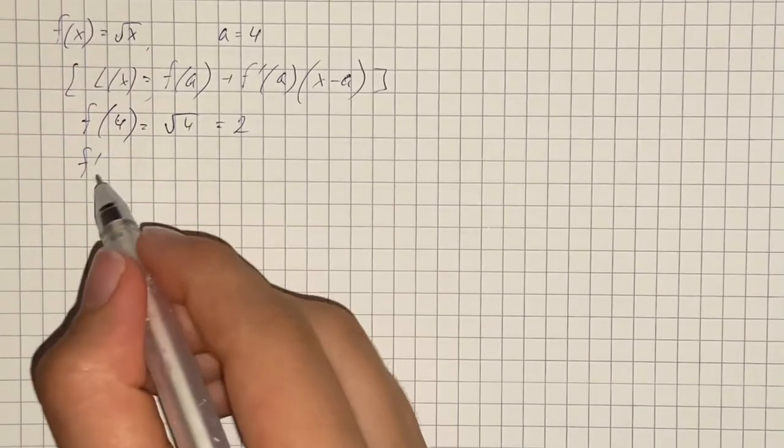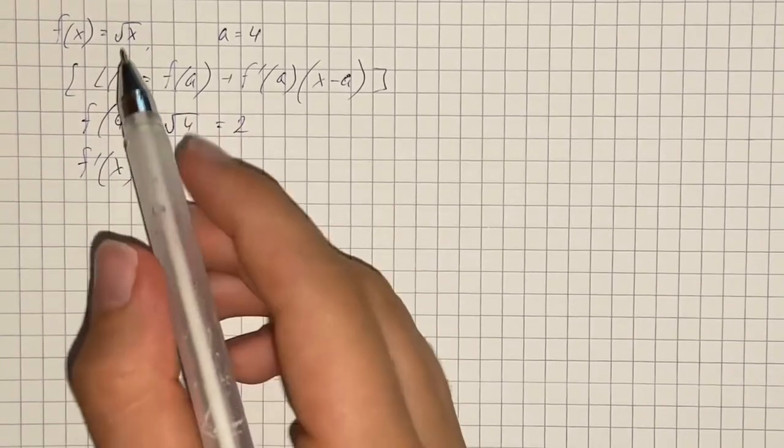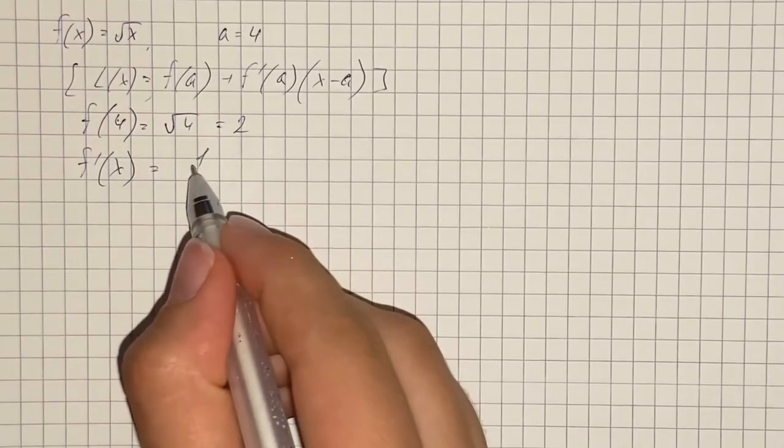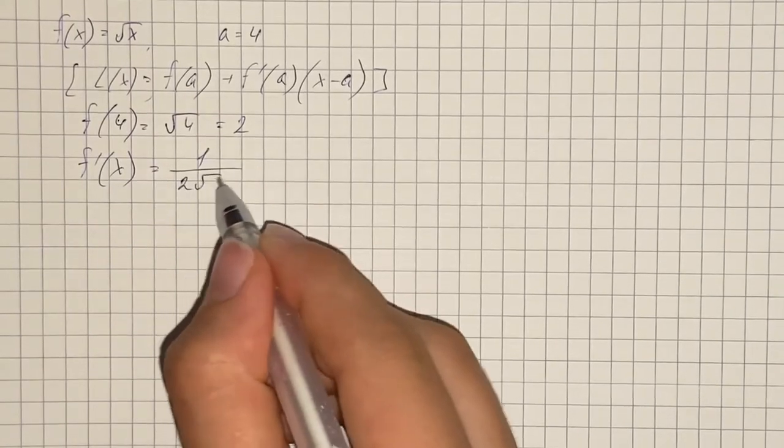Then we're going to find derivative of the given function, so we can differentiate square root of x and it's going to be 1 over 2 square root of x.